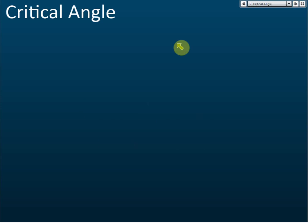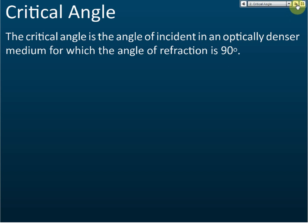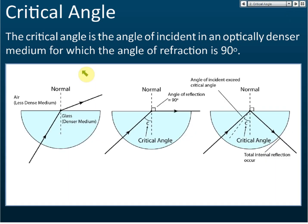First, let's understand what critical angle is, because to understand total internal reflection you must know what critical angle is. The critical angle is the angle of incidence in an optically denser medium for which the angle of refraction is 90 degrees.